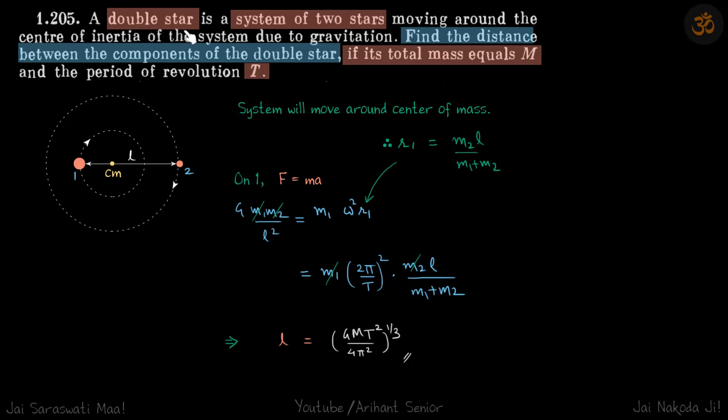We have a double star system consisting of two stars. We are given the total mass and the time period of the system. We need to find the distance between the components of the double star.